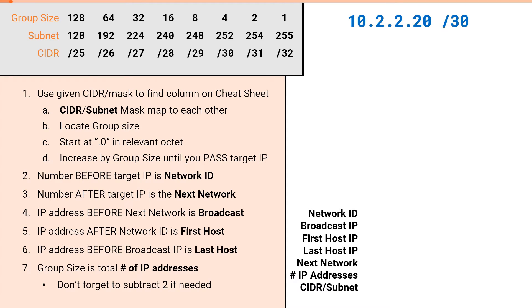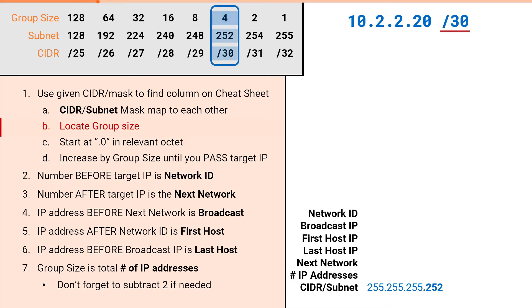We are provided 10.2.2.20 and a CIDR notation of slash 30, which puts us in this column. The slash 30 lists 252 in the subnet row, giving us a subnet mask of 255.255.255.252. Our group size for slash 30 is 4, so we'll start at .0 and increment by 4: .0, .4, .8, .12, .16, .20.